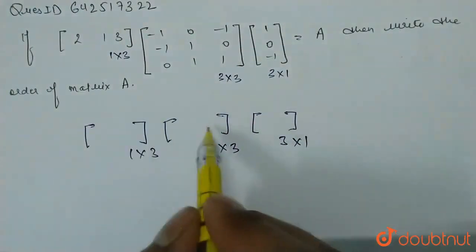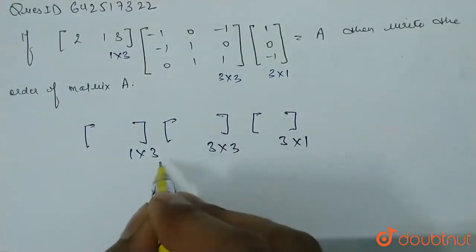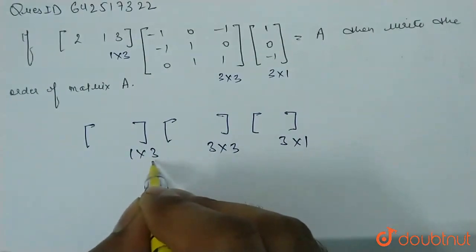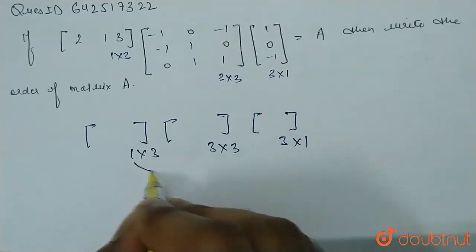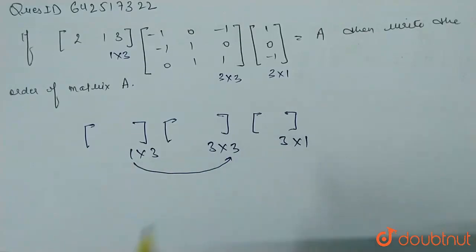Now, multiply first 2. Matrix multiplication is possible because the number of columns in the first equals the number of rows in second. And when we multiply this, the order will be 1 cross 3.